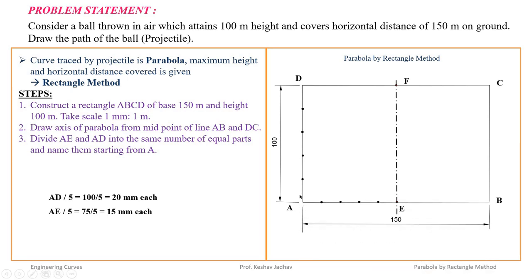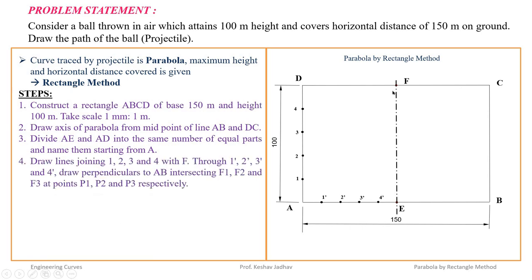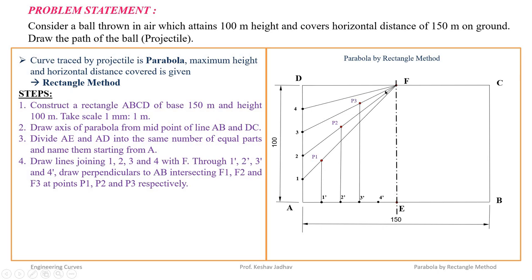Number the division points on AD starting from A as 1, 2, 3, 4 towards D. Similarly on AE write 1 dash, 2 dash, 3 dash, and 4 dash. Now draw lines joining points 1, 2, 3, 4 with F. Then through points 1 dash, 2 dash, 3 dash, and 4 dash draw vertical lines perpendicular to AB. These vertical lines will intersect the lines F1, F2, F3, and F4.